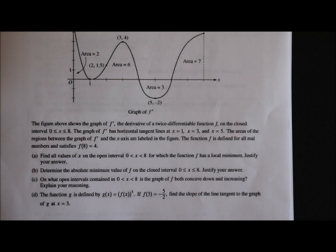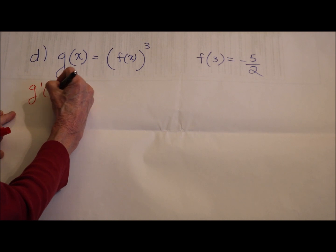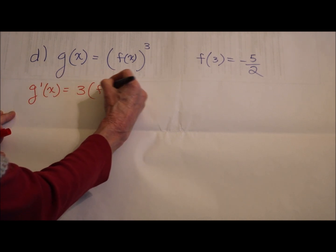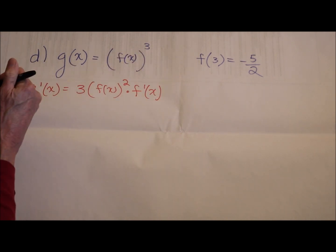Part D: The function g is defined by g of x equals f of x quantity cubed. If f of 3 equals negative 5 halves, find the slope of the line tangent to the graph of g at x equals 3. We're looking for the slope of the line tangent to the graph of g, and they define g for us at x equals 3. Well, if I'm looking for a slope, that means I'm going to take the derivative. So let's take the derivative of this. Here we go: 3 times f of x squared times chain rule f prime of x. Not too bad.